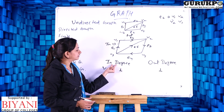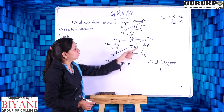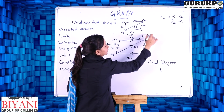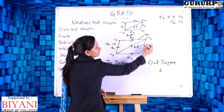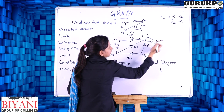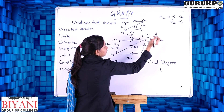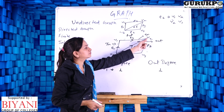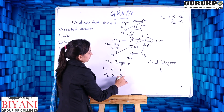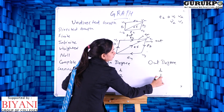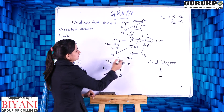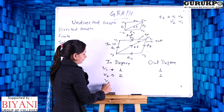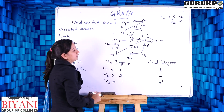Now let's look at V2. Edge E2 is coming toward V2, so it is in-degree for V2. Edge E3 is going outside from V2, so it is out-degree for V2. Edge E5 is also coming toward V2, so it is also counted in in-degree. So V2 has two in-degrees and one out-degree. For vertex V3, there are two edges going outside, so V3 has two out-degrees.